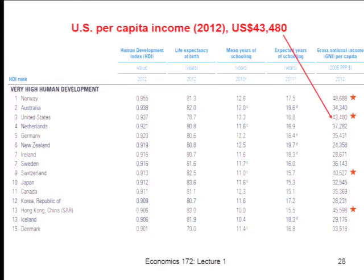Taiwan would probably be on this list too, but the UN has weird reporting about Taiwan because of the dispute with China. Life expectancy is in the 80s almost everywhere — except, of course, the US. We spend the most on health and have the worst health indicators. Mean years of schooling here is double digits everywhere. Expected years of schooling even higher — the typical kid today is going to go to college in all these rich countries, getting 17 or 18 years of schooling, compared to 4.7 years in Africa today.